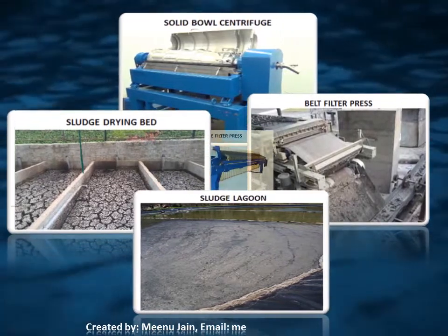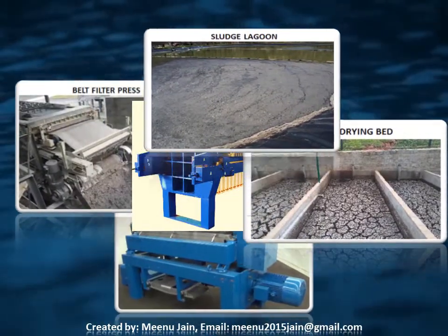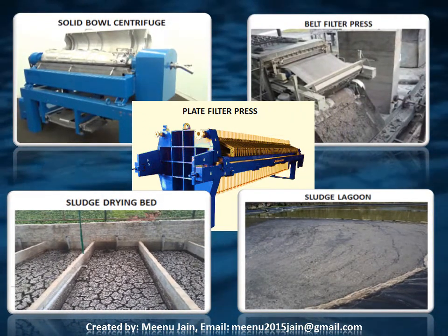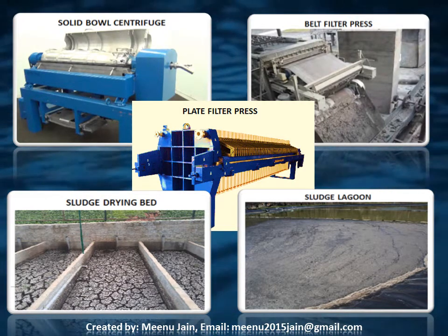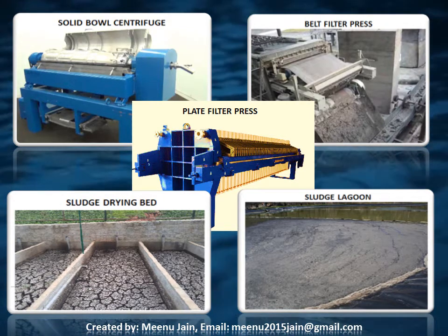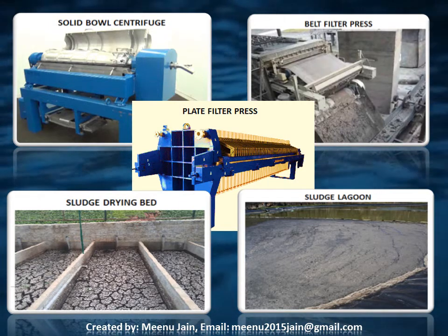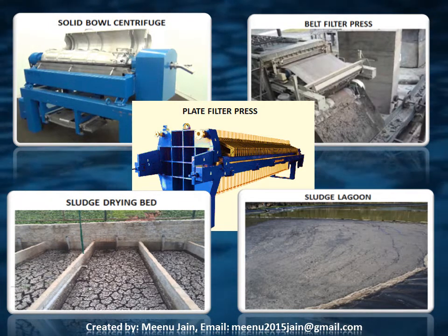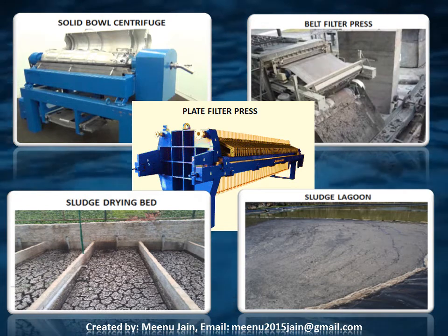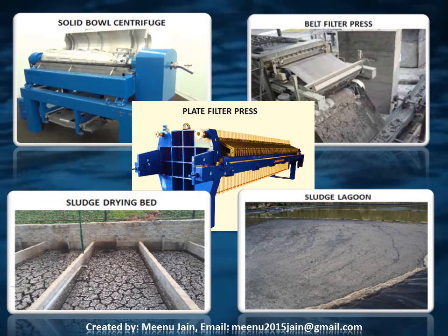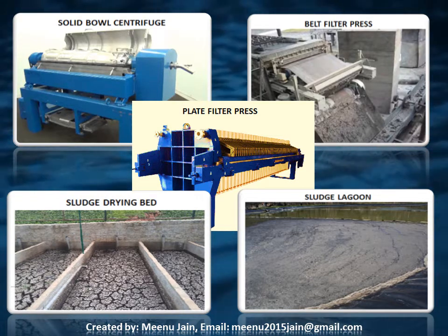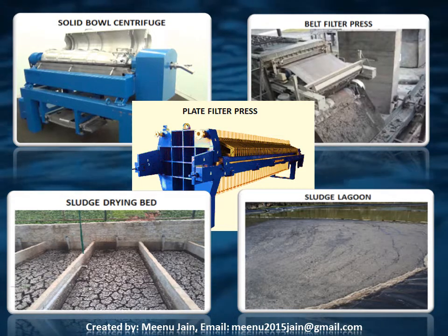Some dewatering equipment types include solid bowl centrifuge, belt filter press, plate and frame filter press, drying bed, and sludge lagoon. During industrial wastewater treatment, a huge quantity of sludge is produced. One treatment method is thickening the sludge using a solid bowl centrifuge. Prior sludge has a concentration of around 0.5–1% dry solids; after thickening, it comes up to 5–6% dry solids. This process reduces waste activated sludge volume by more than 80% and minimizes sludge amount for digestion by 30–40%.